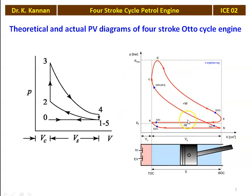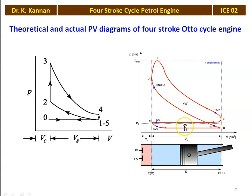Using this P-V diagram you can find out the work done. The larger loop is called the positive loop and the smaller loop is called the negative loop. The work done in the positive loop is positive and in the negative loop it is negative. To calculate the net work done: positive work minus negative work gives the net work done from the P-V diagram.